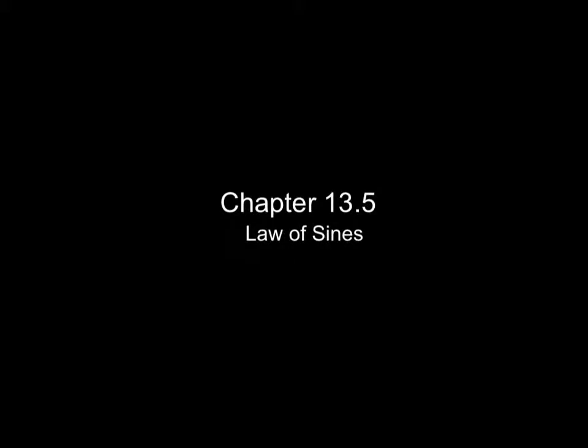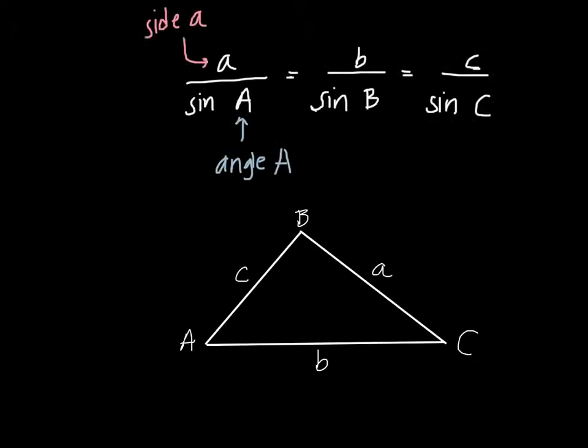Hey there, this is chapter 13.5, the law of sines. So this here is our law of sines: a over sine A equals b over sine B equals c over sine C. Our lowercase variables are the sides, so side a and side b, etc. And our uppercase are the angle values, so we have angle A, B, and C.